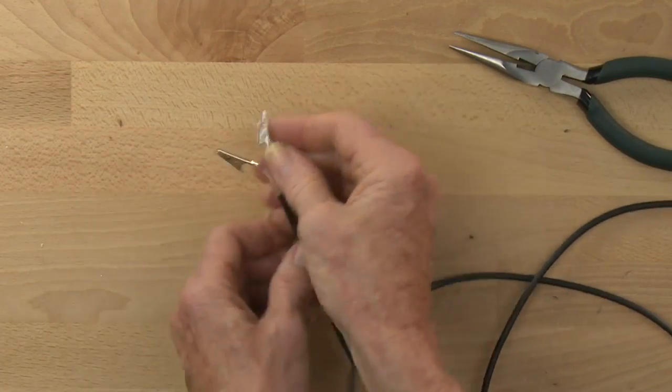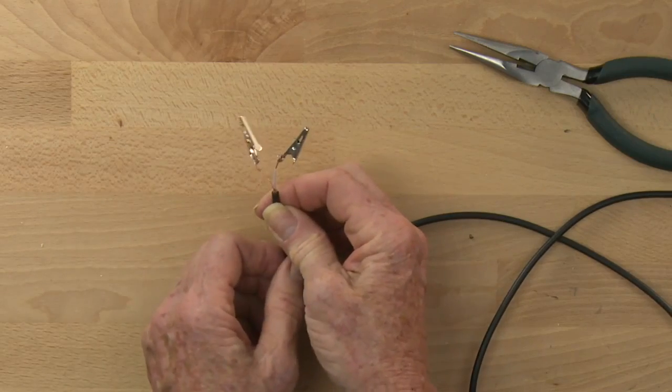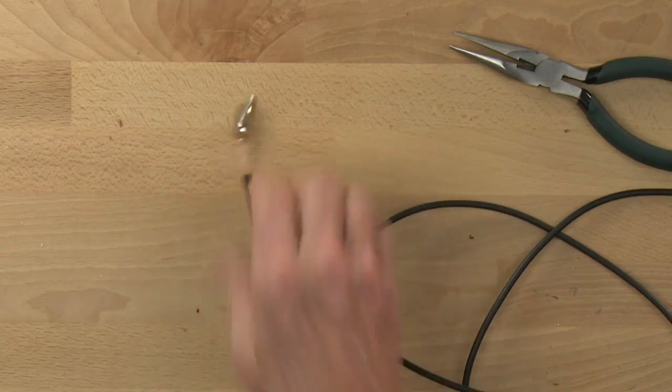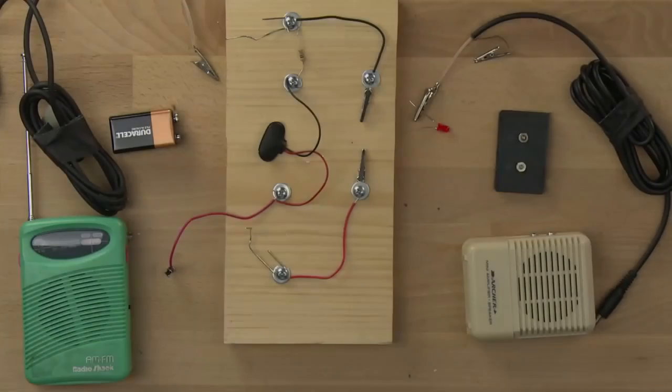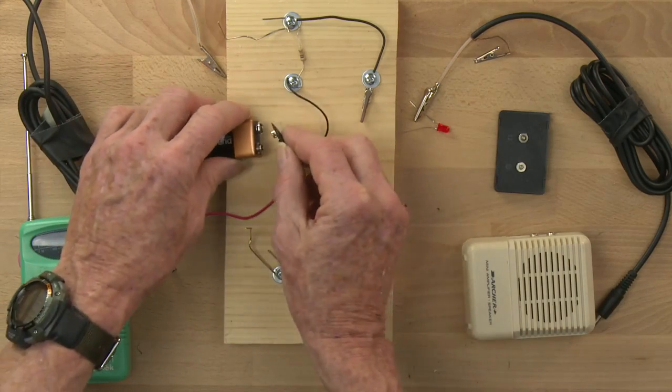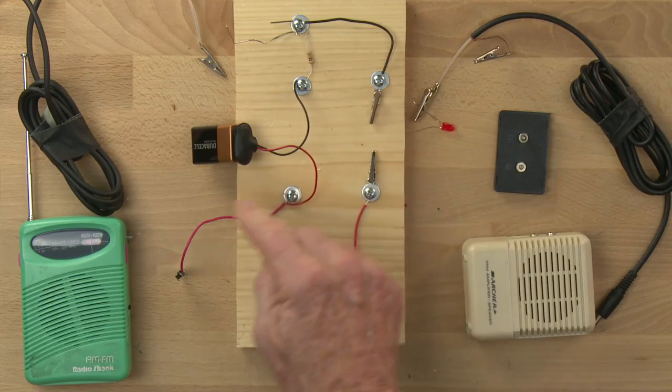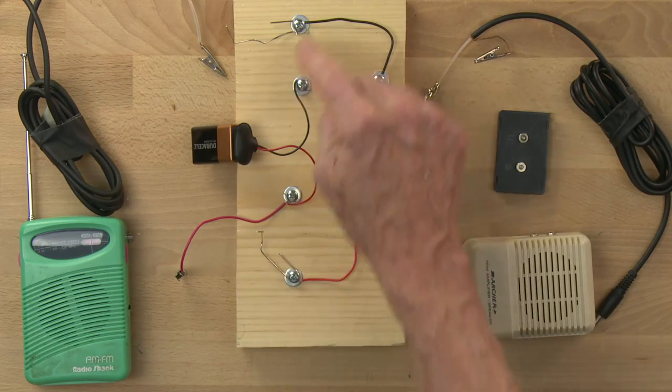Okay, so now I've made my mini phono plug to alligator clip connector. So, let's put it all together. I'm going to attach the battery. The positive side of the battery is on the red wires. The negative side is on the black wires.